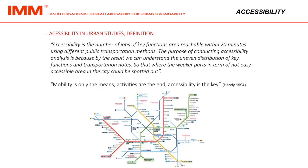Accessibility is the number of jobs or key functions area reachable within 20 minutes using different public transportation methods. The purpose of conducting accessibility analysis is because by the result we can understand the uneven distribution of key functions and transportation nodes, so that the weaker parts in terms of not easily accessible areas in the city could be spotted out.